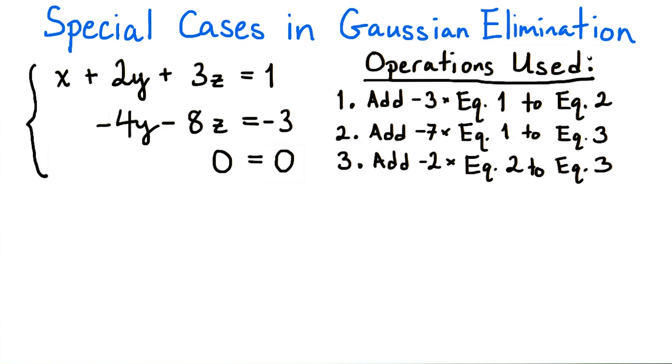Now, as before, subtract 2 times the second equation from the third. Unlike last time, the bottom equation is not a contradiction. Certainly 0 equals 0. So what are we to make of this?